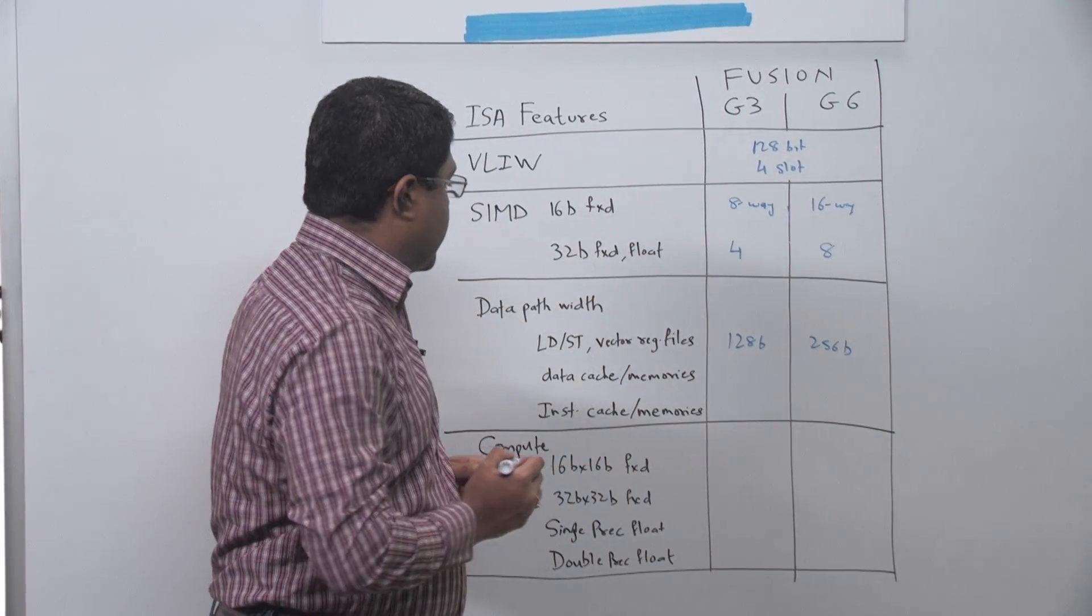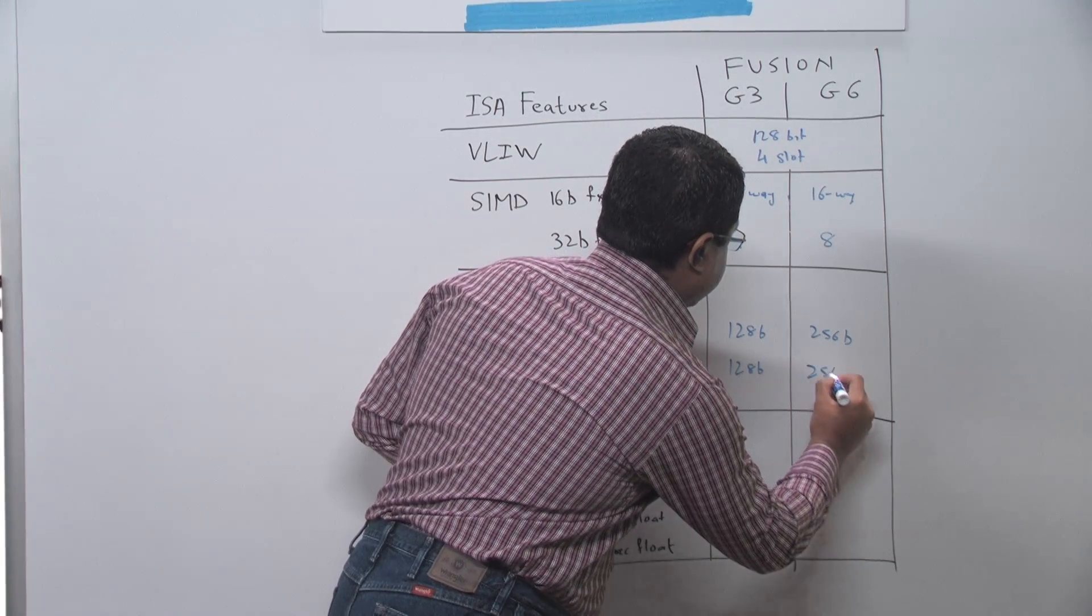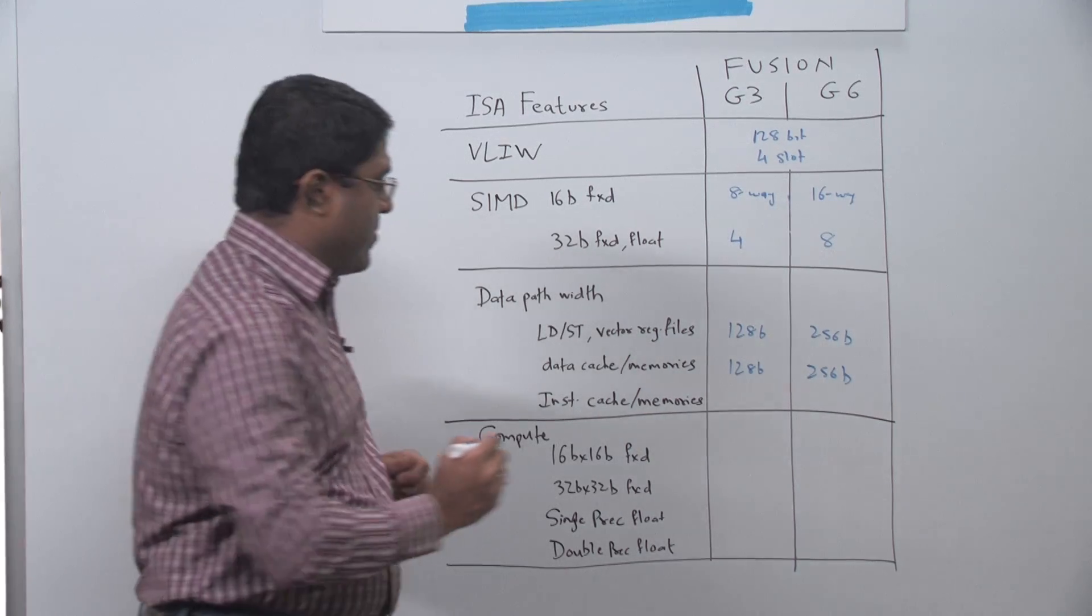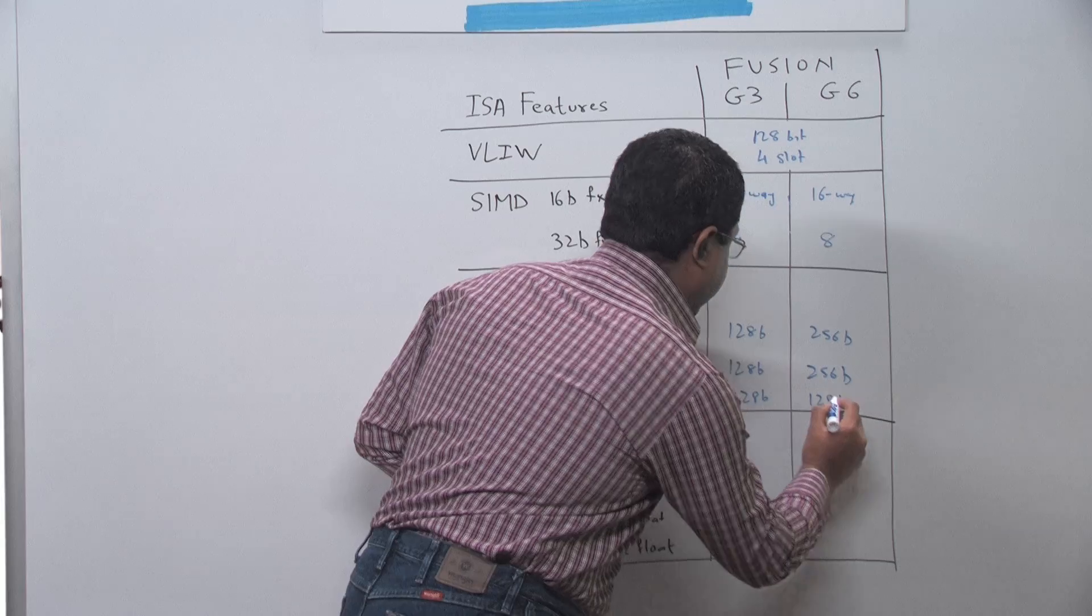For the data caches and memories, again 128-bit wide for G3 and 256-bit wide for the G6. The instruction cache and memories are 128-bit each for both G3 and G6.